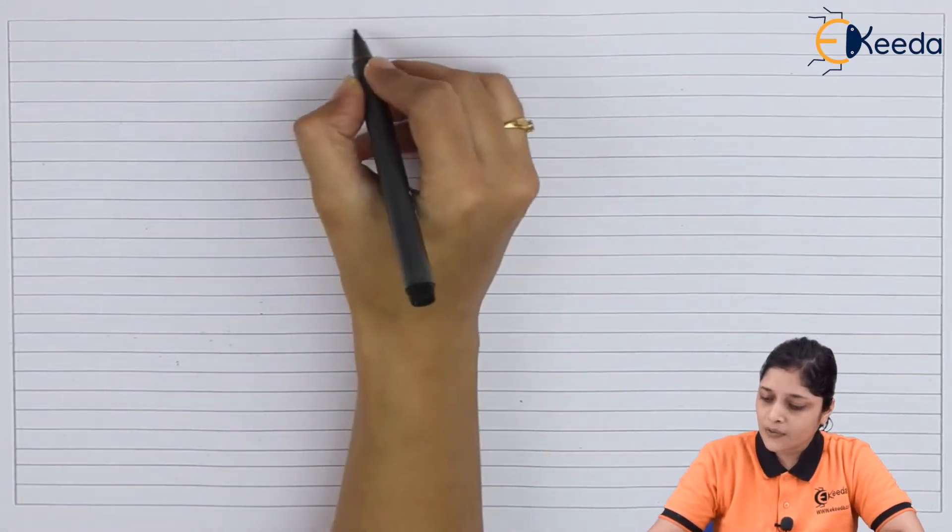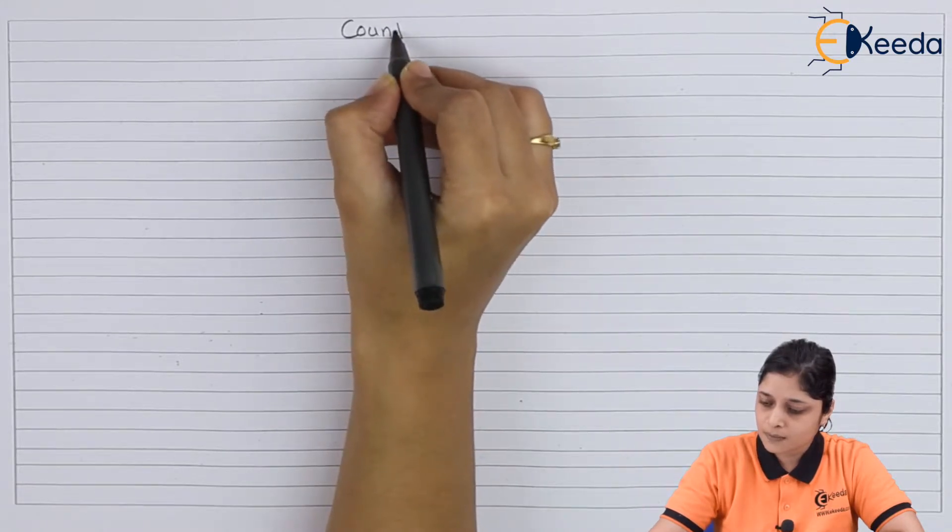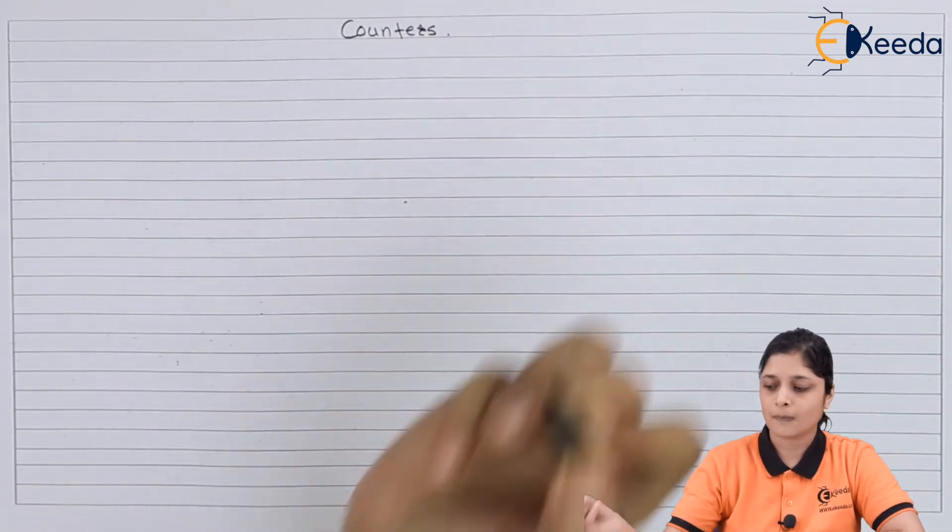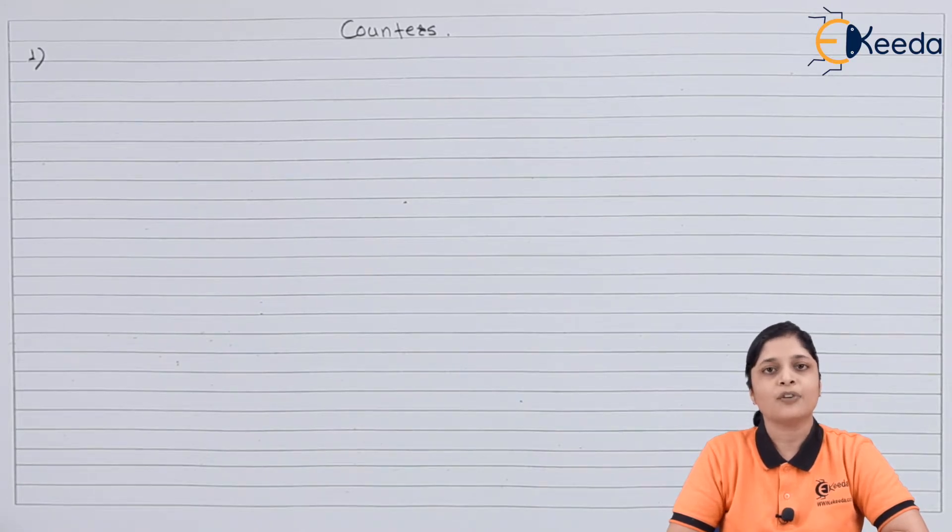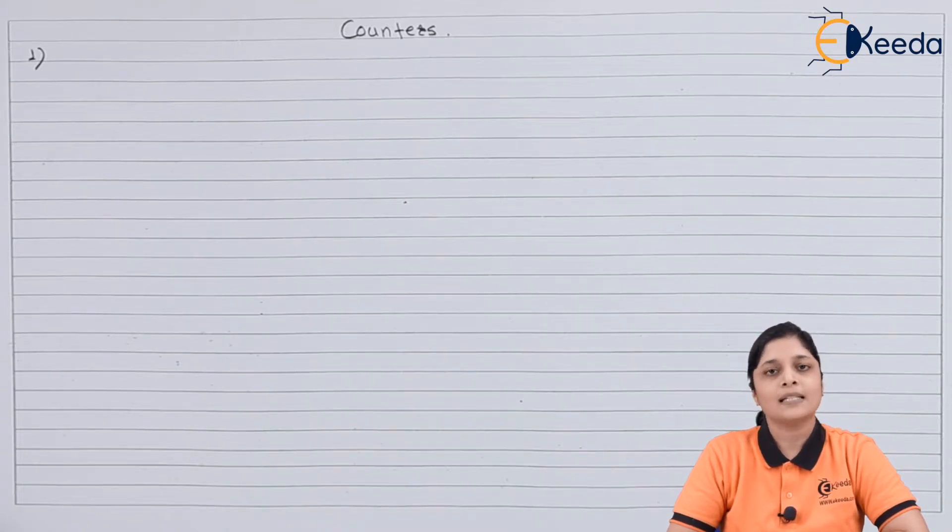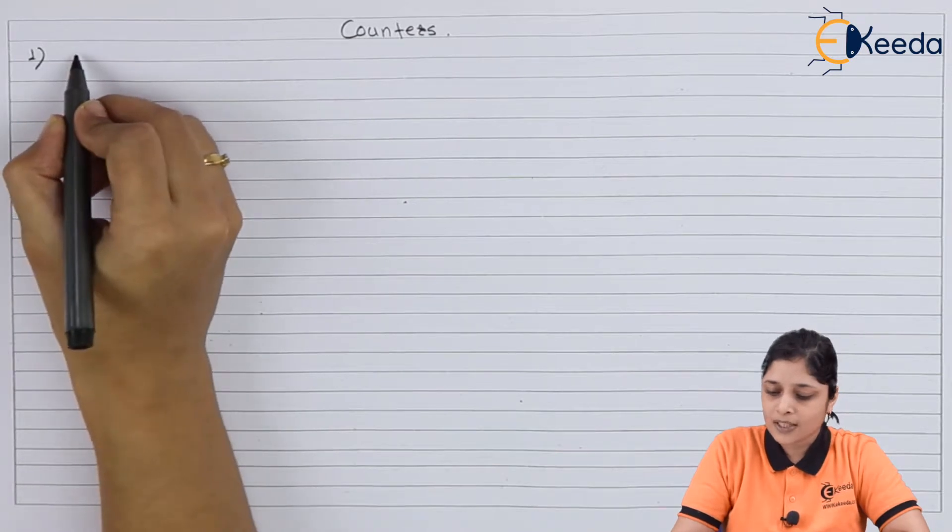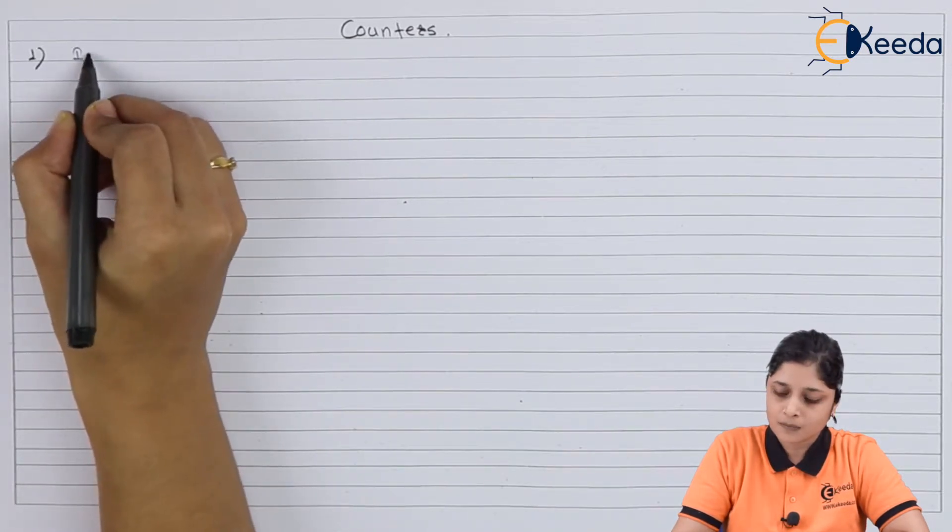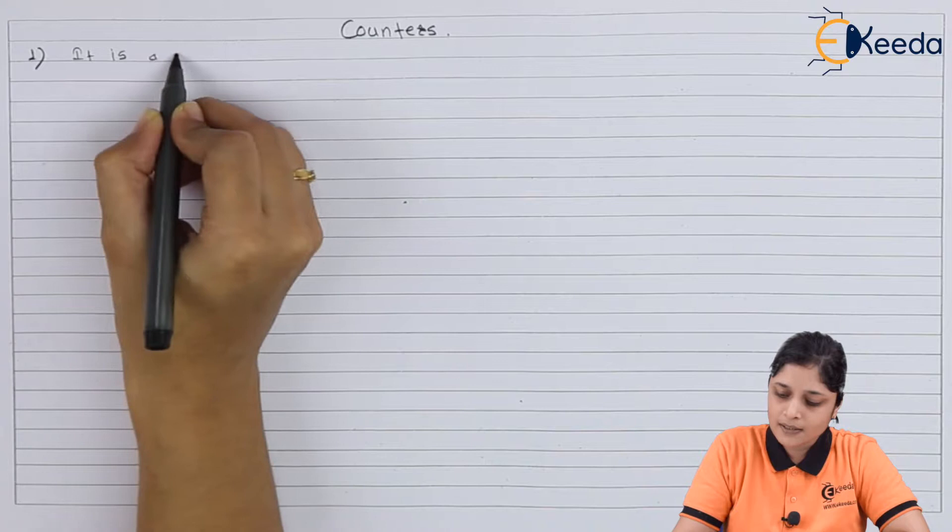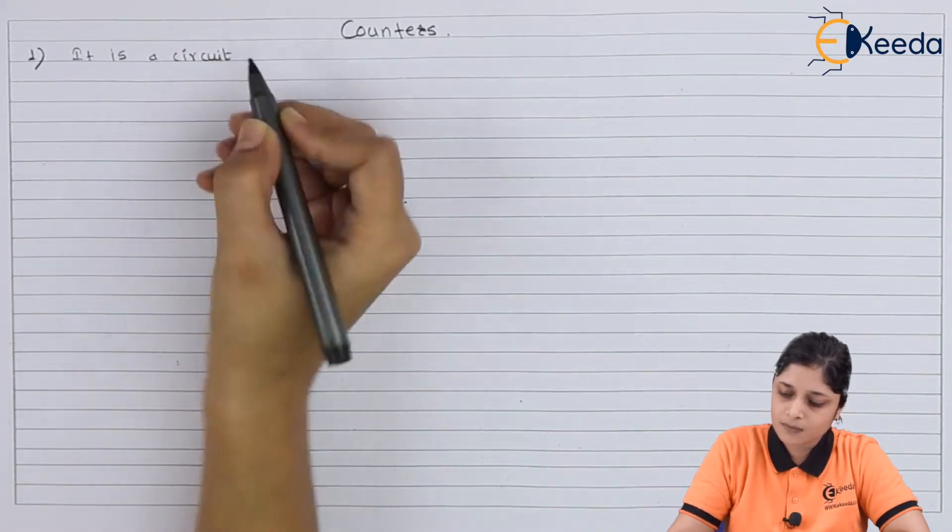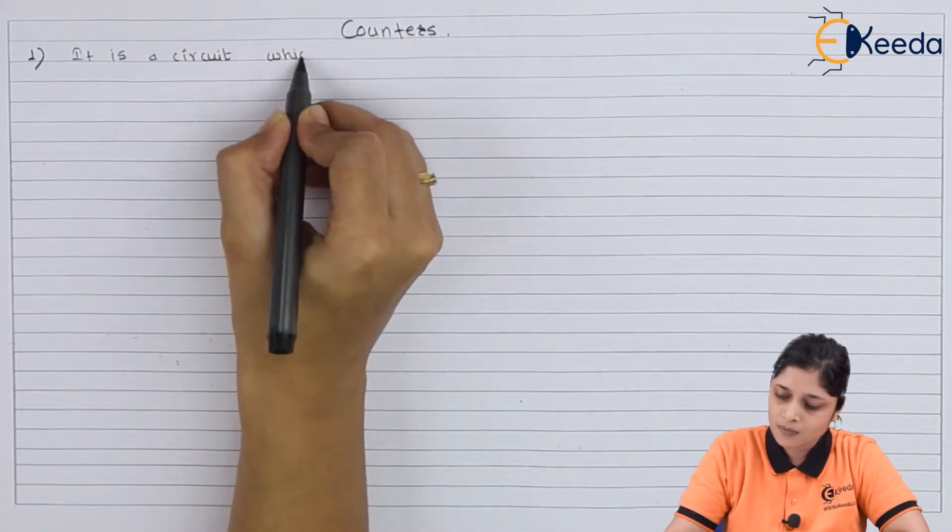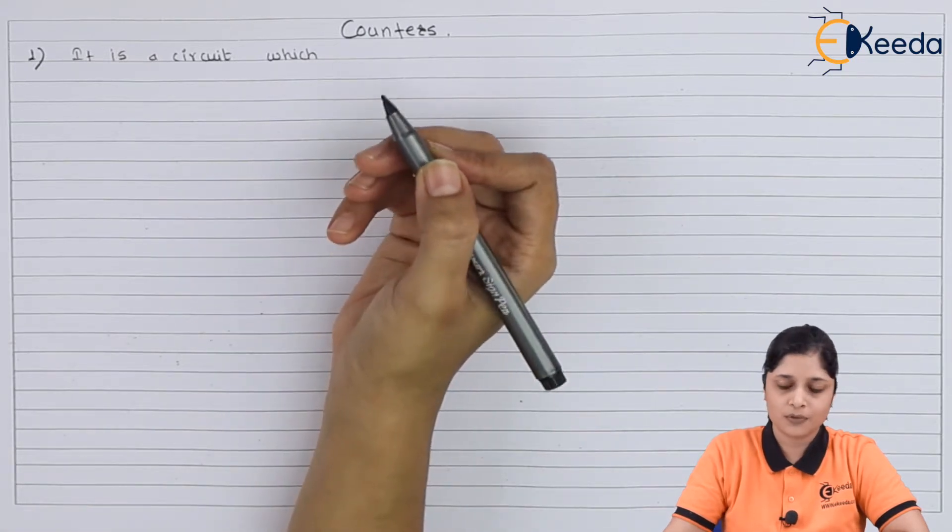Our heading is counters. A counter is a circuit which is used to count the number of pulses. It is used for counting purposes in many applications. A counter is a circuit which counts up to a particular value.